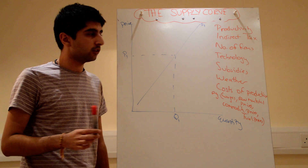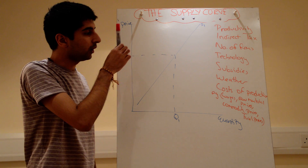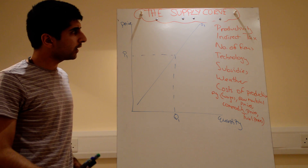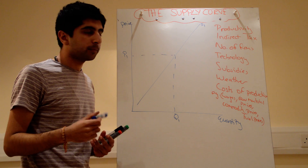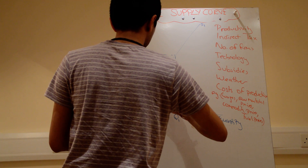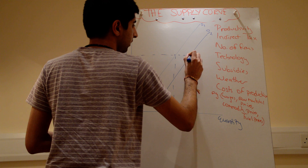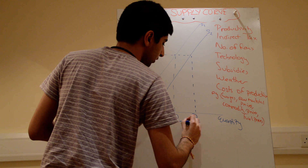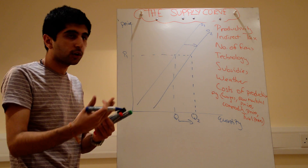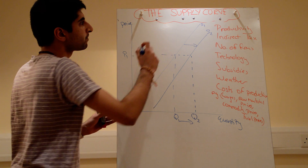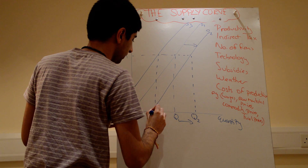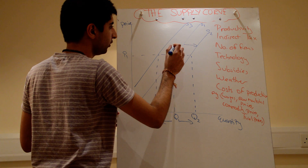The best way to think about it: whatever increases the cost of production will shift the supply curve to the left; whatever reduces the cost of production will shift the supply curve to the right. Any factor that increases supply shifts the curve from S1 to S2 — at the same price, more is supplied and quantity rises to Q2. Factors that reduce supply shift the curve to the left — to S3 — where at the same price, less is supplied, from Q1 down to Q3.